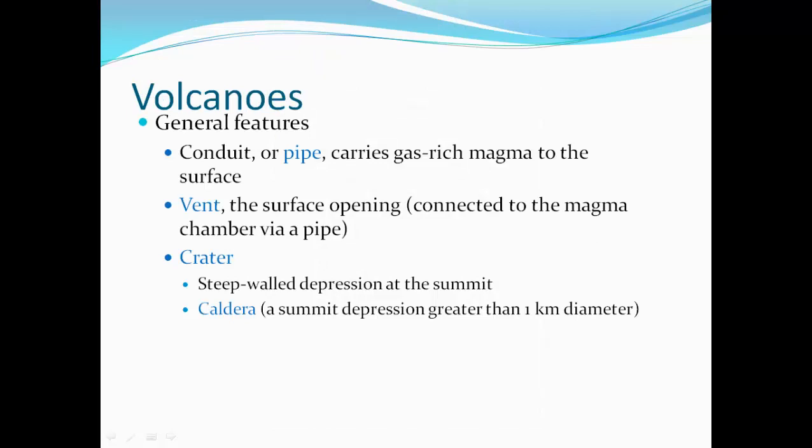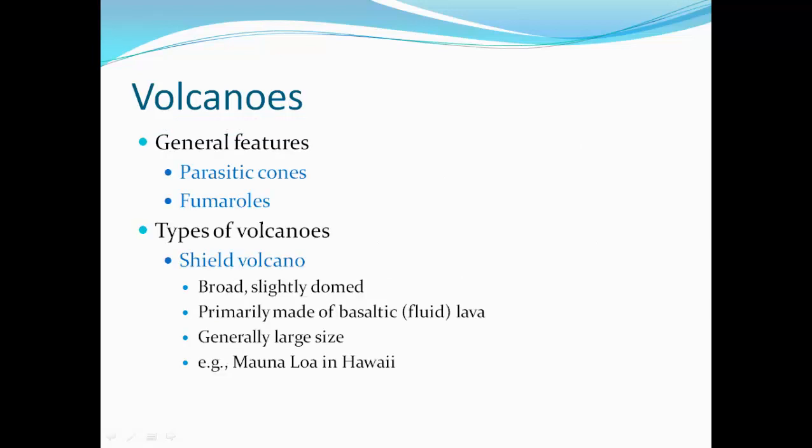Features we find on volcanoes include conduits or pipes, which carry the gas-rich magma to the surface. The vent is a surface opening connected to the magma chamber by a pipe. A crater is a steep-walled depression at the summit. If that crater is greater than one kilometer in diameter, we call it a caldera. Other features may include a parasitic cone on the side of the volcano, or fumaroles — small plain vents on the side of the volcano.